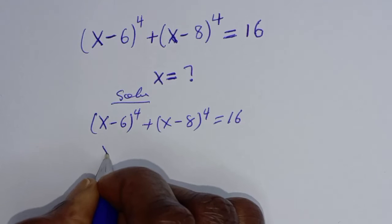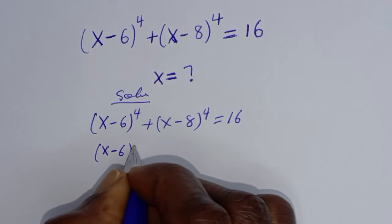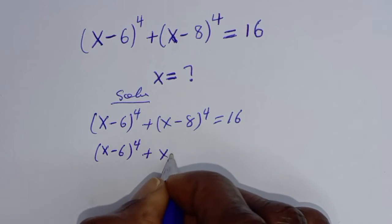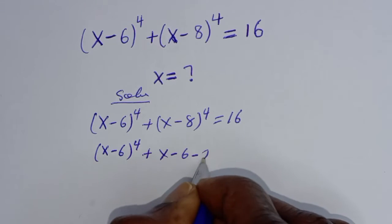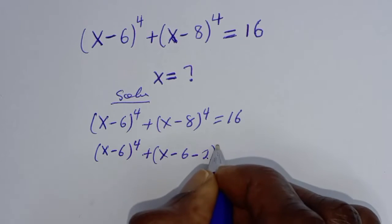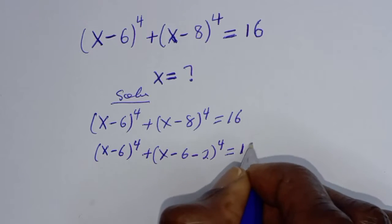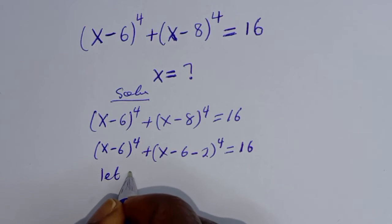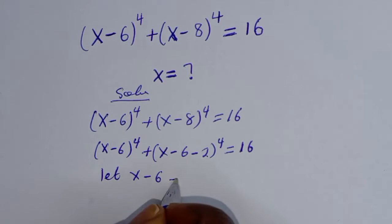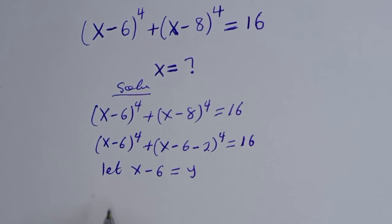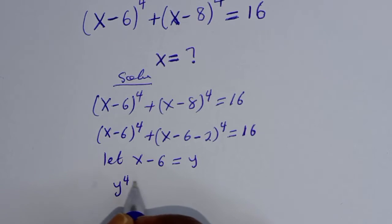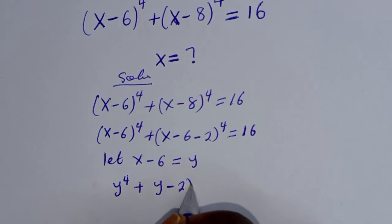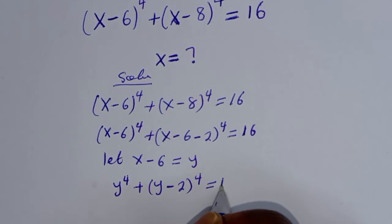We can rewrite (x minus 8) as (x minus 6 minus 2) to the power of 4, so the equation becomes (x minus 6) to the power of 4 plus (x minus 6 minus 2) to the power of 4 equals 16. Let y equal x minus 6, so this becomes y to the power of 4 plus (y minus 2) to the power of 4 equals 16.